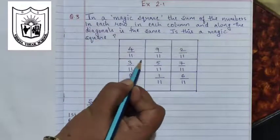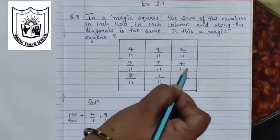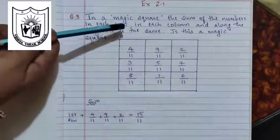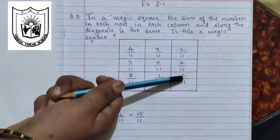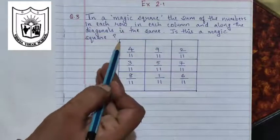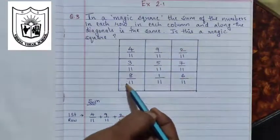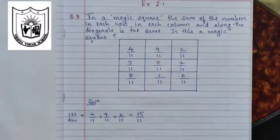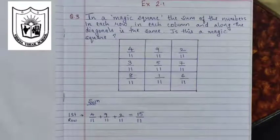Now see, these numbers which are in line — this is the first row, this is the second row, this is the third row. And if you consider vertically, this is the first column, second column, third column. And diagonally we will have these three numbers along the diagonal. So we have to find the sum of these numbers in the row, column and along the diagonal and check whether we get the same answer. If we get the same answer, then we can say that it is a magic square.